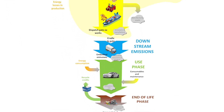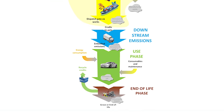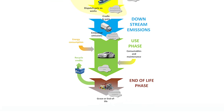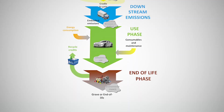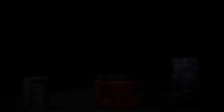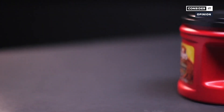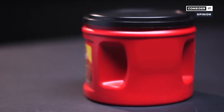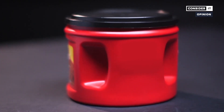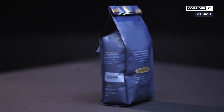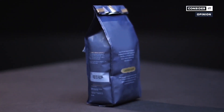Let's take a common example of life cycle analysis using coffee packaging. We have three different types of packaging: the first, a steel coffee can; the next, a plastic coffee jug; and the third, a metallic plasticky paper that works as a pouch for coffee.